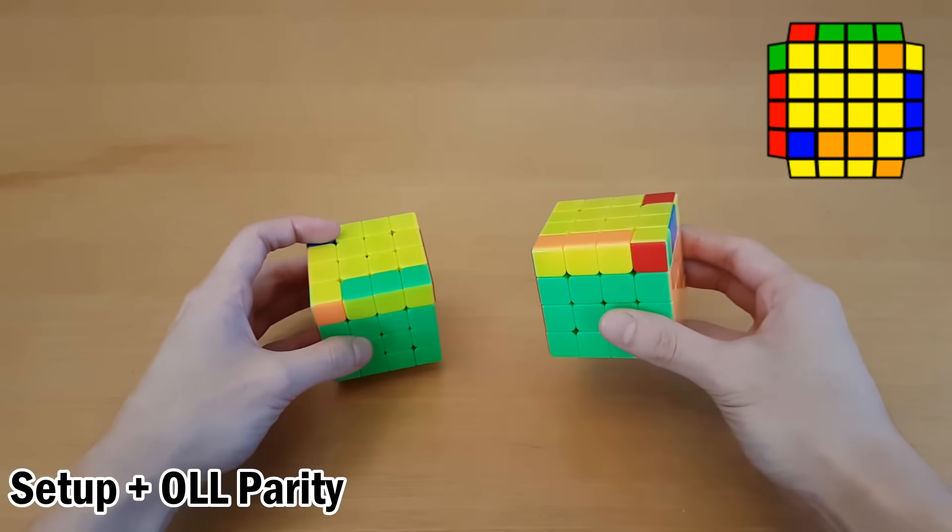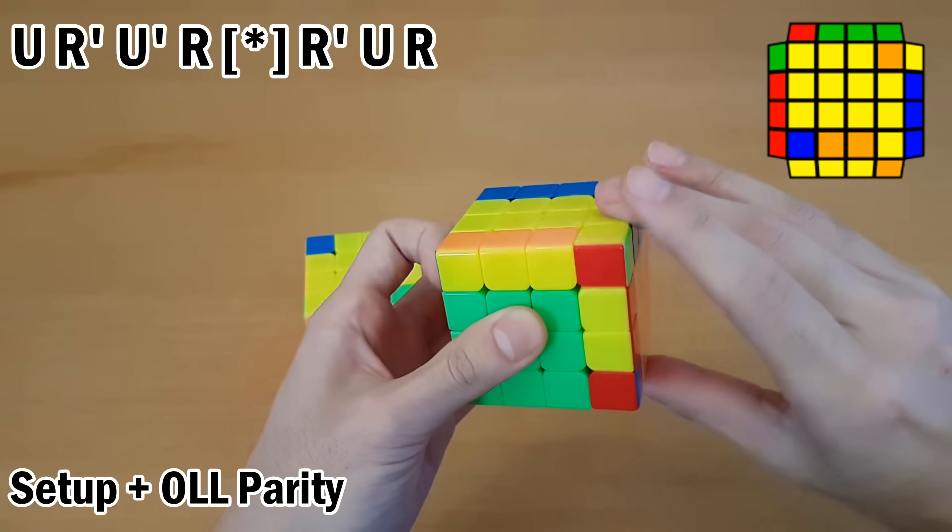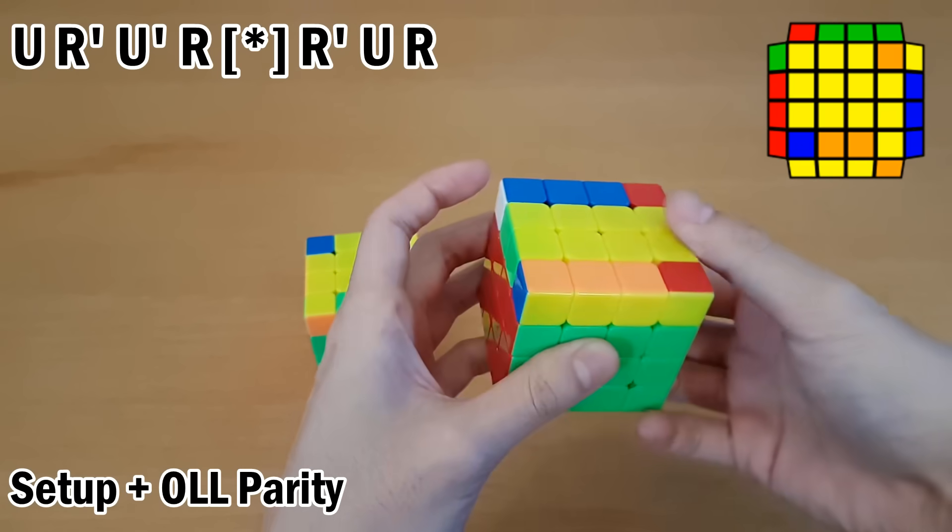For this case and its mirror, there are two good ways of doing it. The way I've always seen it being taught is like this. R' U' R. And that makes this bar on the front. You just do OLL Parity and then undo that part of the back.